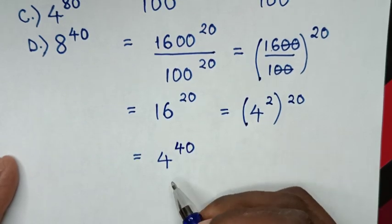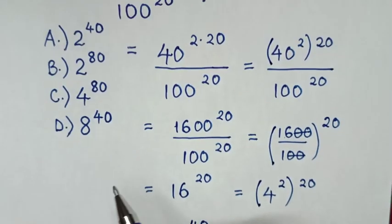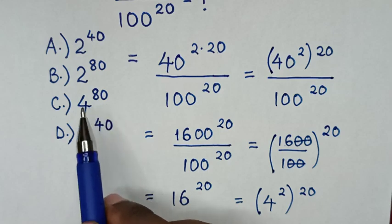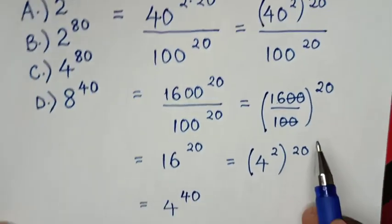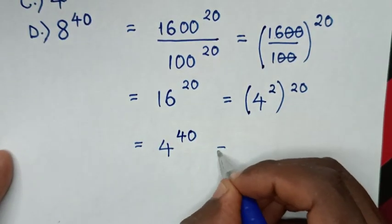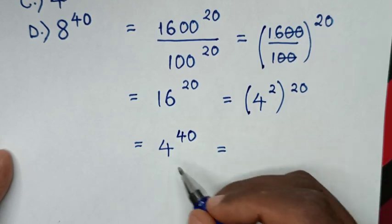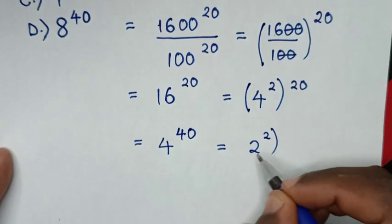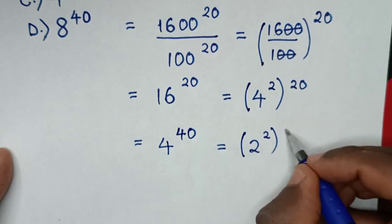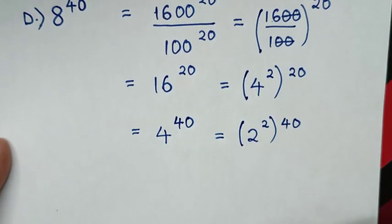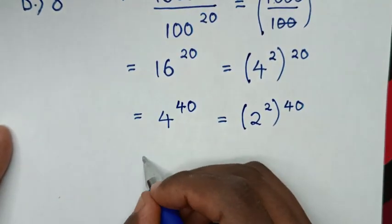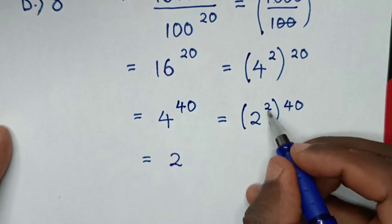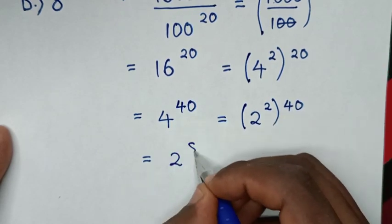So from 4 power of 40, since 4 power of 80 is in our answers, we reduce to base 2. It will be equal to: 4 is the same as 2 power of 2, in brackets, power of 40. Then in the next step, it will be equal to 2 power of 2 times 40, which is 2 power of 80.